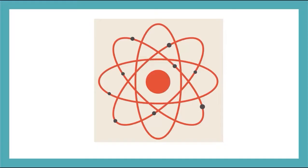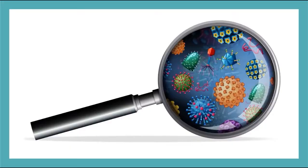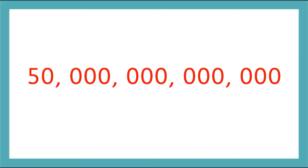Matter is made out of teeny tiny particles called atoms and molecules. It is impossible to see an atom or molecule with your own eyes, or even with a magnifying glass. To give you an example of how small an atom is, think about a single grain of sand. Imagine you hold it on the tip of your finger. In that itty bitty grain of sand, you can fit 50 trillion atoms. A trillion is a very big number — 50 trillion is a 50 with 12 zeros behind it.